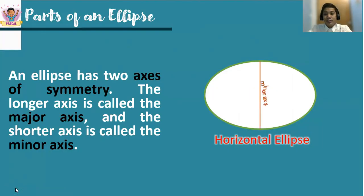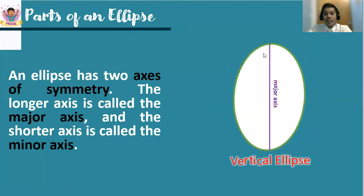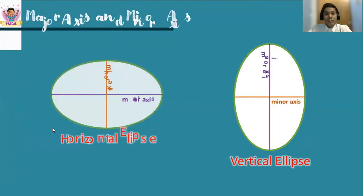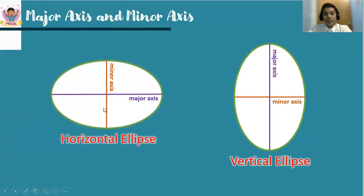For a vertical ellipse, the major axis is a vertical line, while the minor axis is a horizontal line. Comparing the two, look at the parts in terms of the major axis and the minor axis.